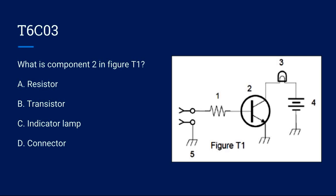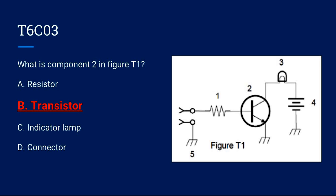T6C03: What is component 2 in figure T1? A, resistor. B, transistor. C, indicator lamp. Or D, connector? The correct answer is B, transistor.